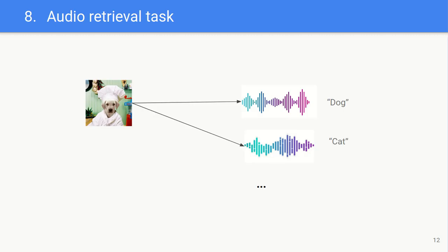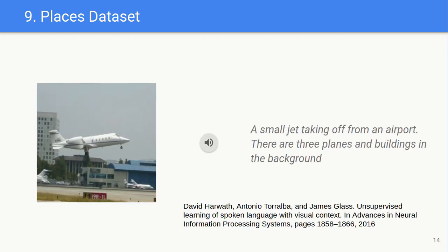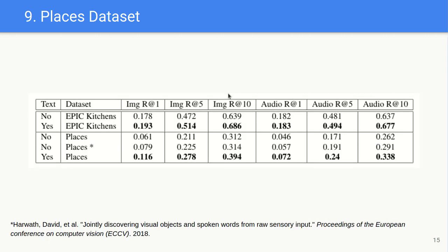We also do the opposite task, audio retrieval task, and we also get an improvement in the three recalls. We also try it in the Places dataset. This is much bigger and contains many more complex utterances. For example, this one: a small jet taking off from an airport. There are three planes and buildings in the background. And we also improve performance with respect to the baseline published and our replication of the same experiment.